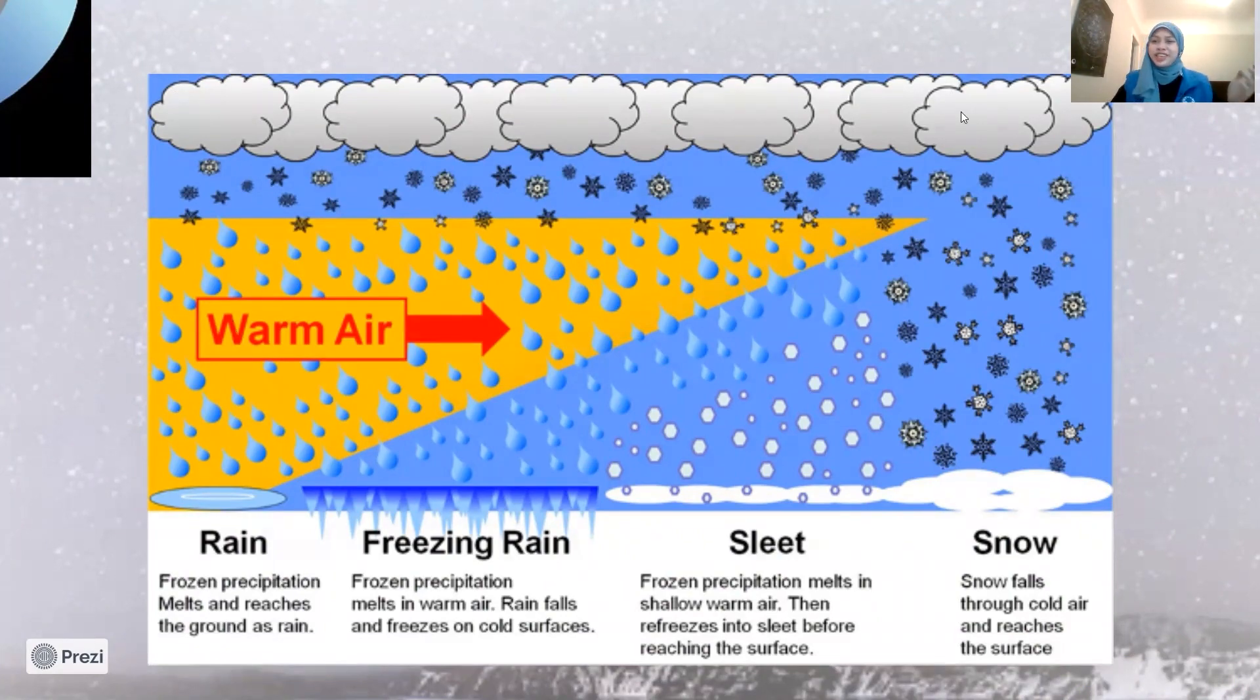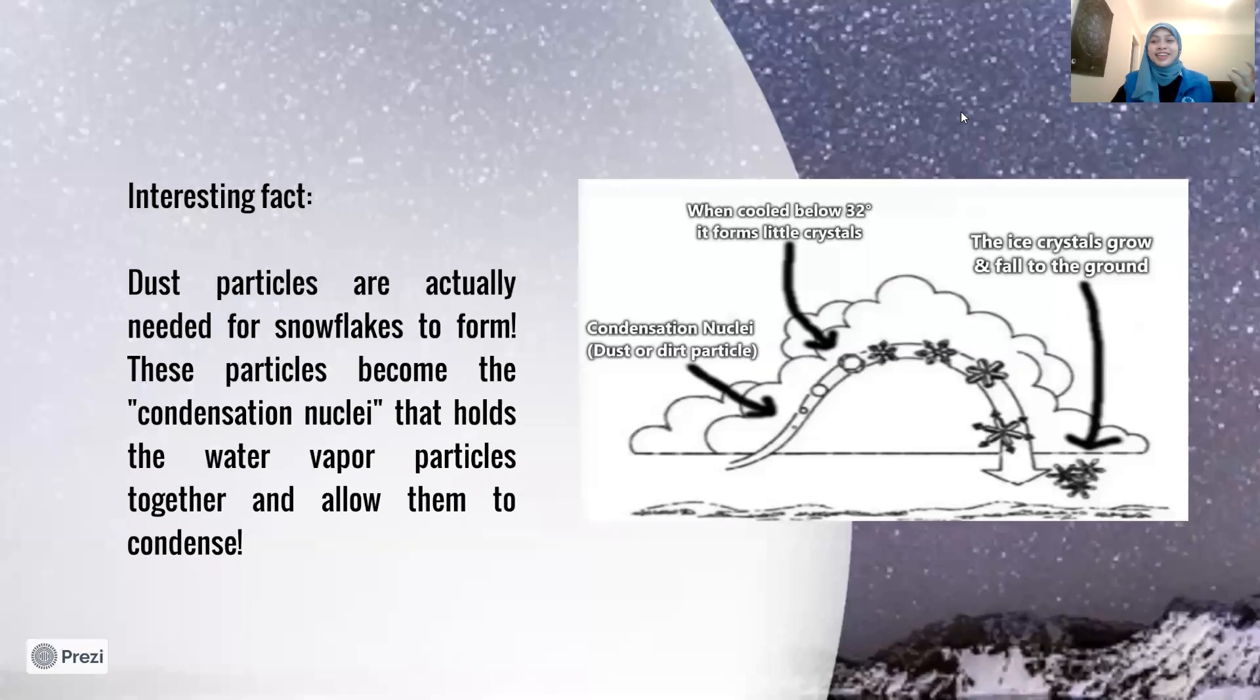An interesting fact about snow and also rain is that dust particles are actually needed for these condensation to form. These particles become something called the condensation nuclei, and we can think about this like a seed that holds the water vapor particles together and allows them to condense. And when it's cold enough, the condensation comes in a form of ice crystals, which then bind together to become snowflakes before they fall to the ground.